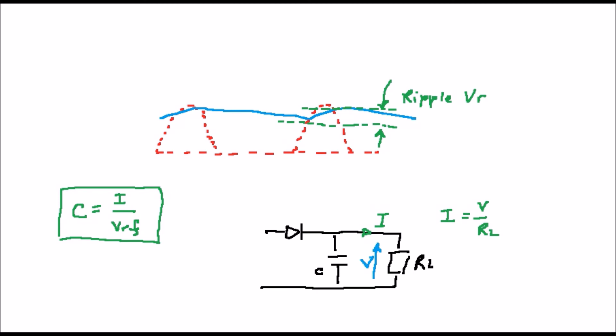The meaning of ripple voltage is shown in the diagram on the screen. It is basically the amount of variation in the final DC voltage.